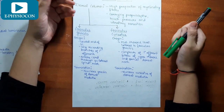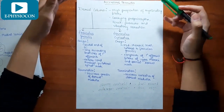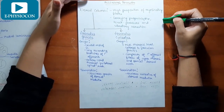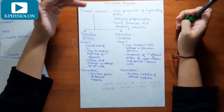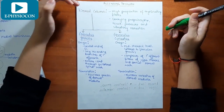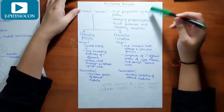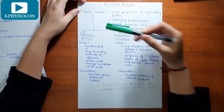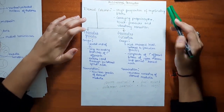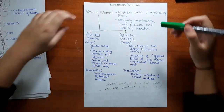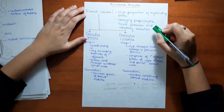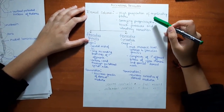Now let's move to our topic. First we'll discuss the ascending pathway. Ascending tracts are the axons which carry information from the spinal cord to the brain. We'll discuss the dorsal column first, as it comprises purely ascending tracts. The dorsal column has myelinated fibers in high proportion and carries proprioceptive, touch, pressure, and vibratory sensation. Proprioception refers to sensation for locomotion.